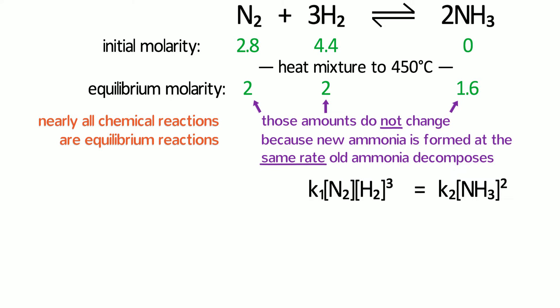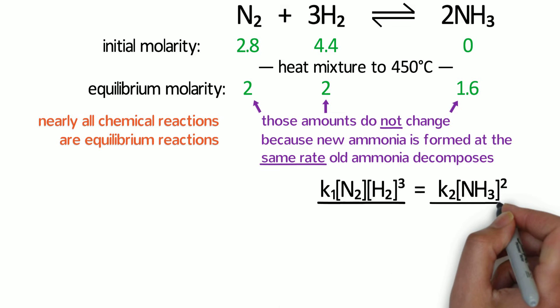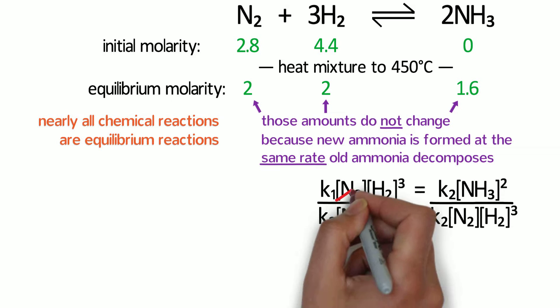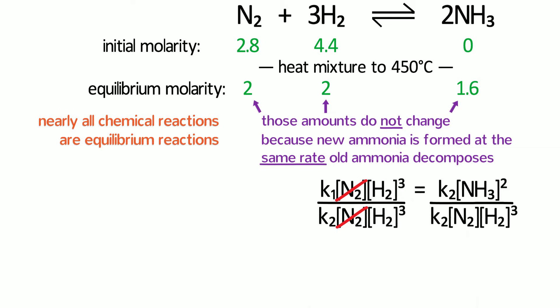Now, what I want to do is to put all the variables on one side and the constants on the other. So let's see what happens if I divide both sides of the equation by k2, N2, H2 to the third. On the left side, N2 over N2 cancels out as does H2 over H2. On the right side, k2 over k2 cancels out. That leaves me with k1 over k2 equals NH3 to the second over N2 H2 to the third.